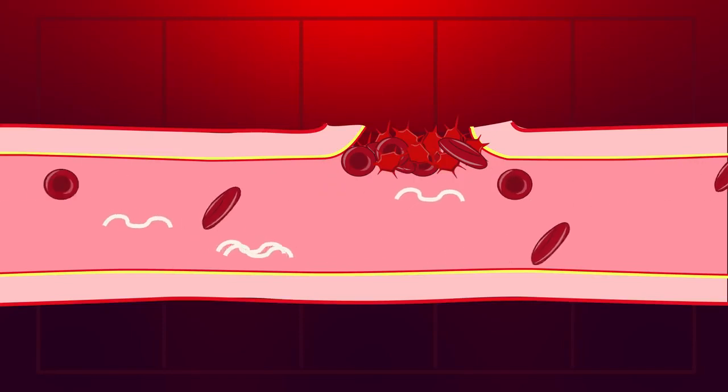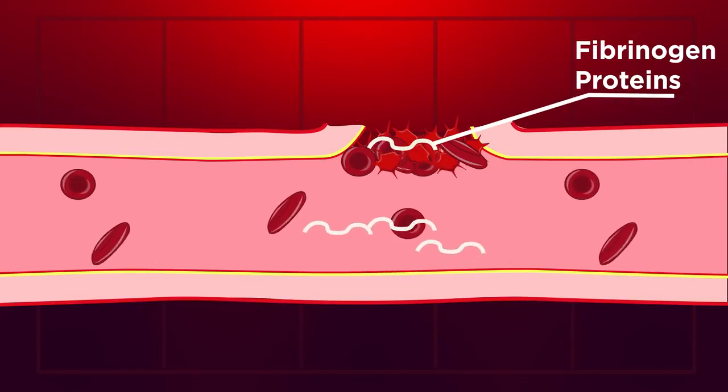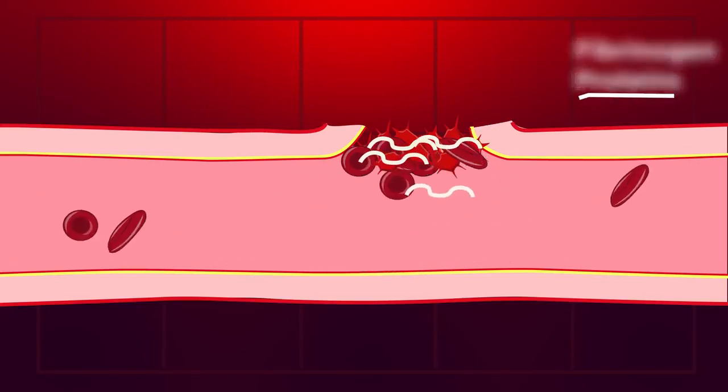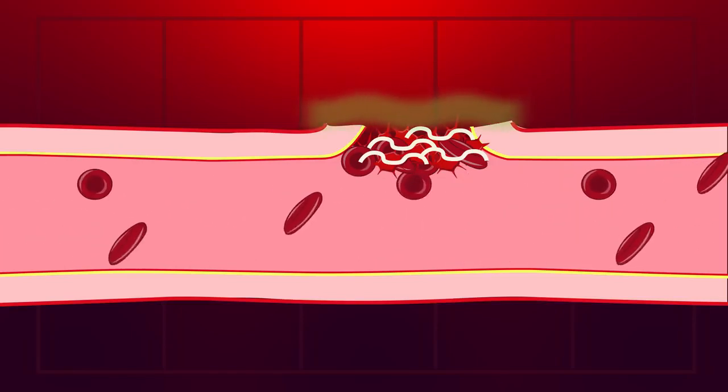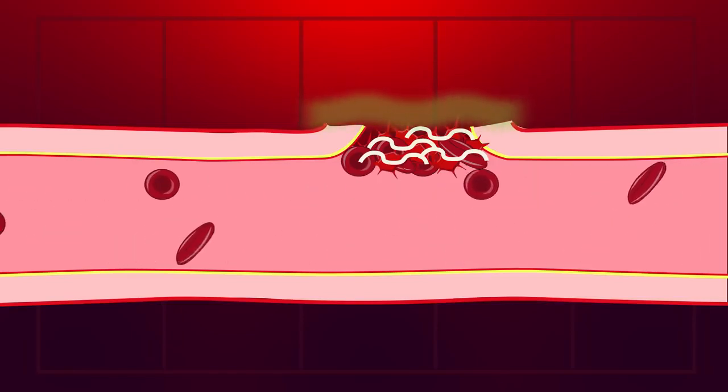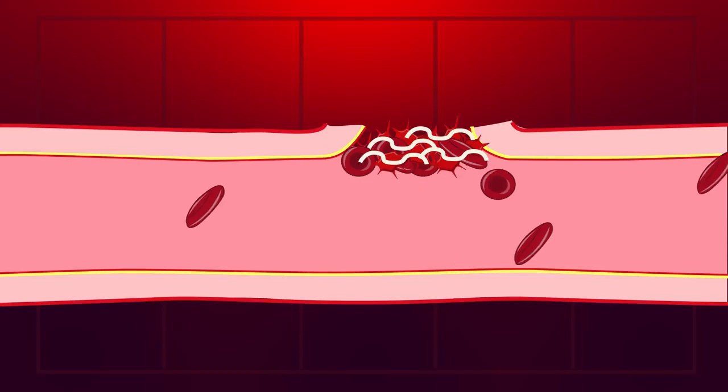A protein called fibrin does exactly that. In our blood, there are soluble fibrinogen proteins. At a wound, these soluble fibrinogen proteins are exposed to outside chemicals that aren't normally found in blood vessels. Like with the collagen and platelets, this exposure causes the fibrinogen proteins to turn into sticky fibrin fibers.